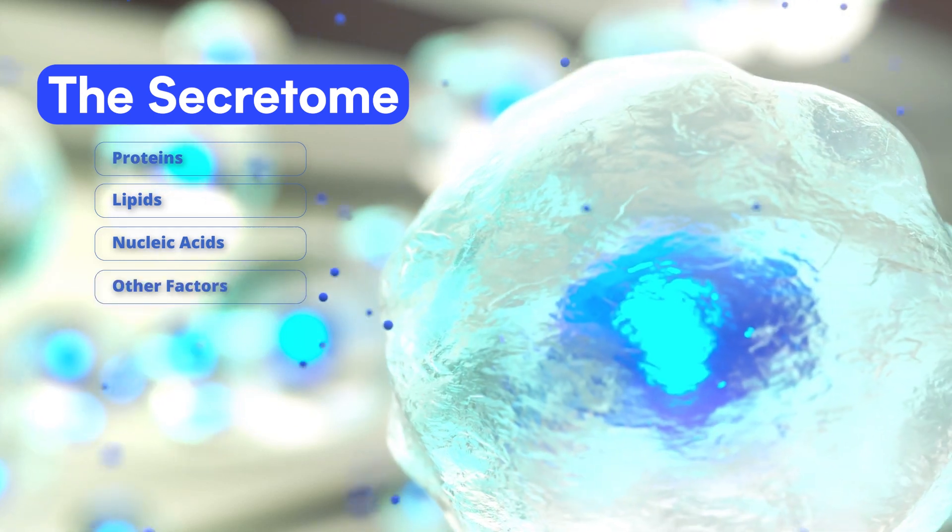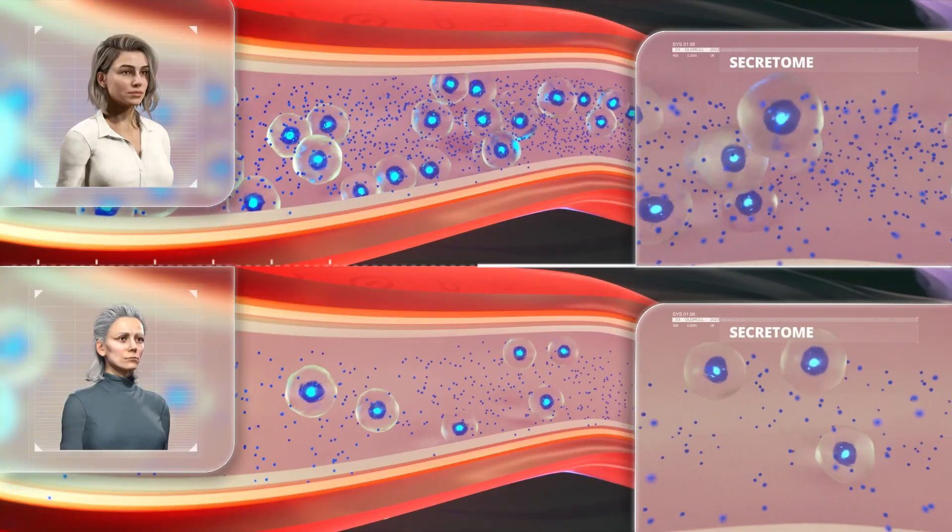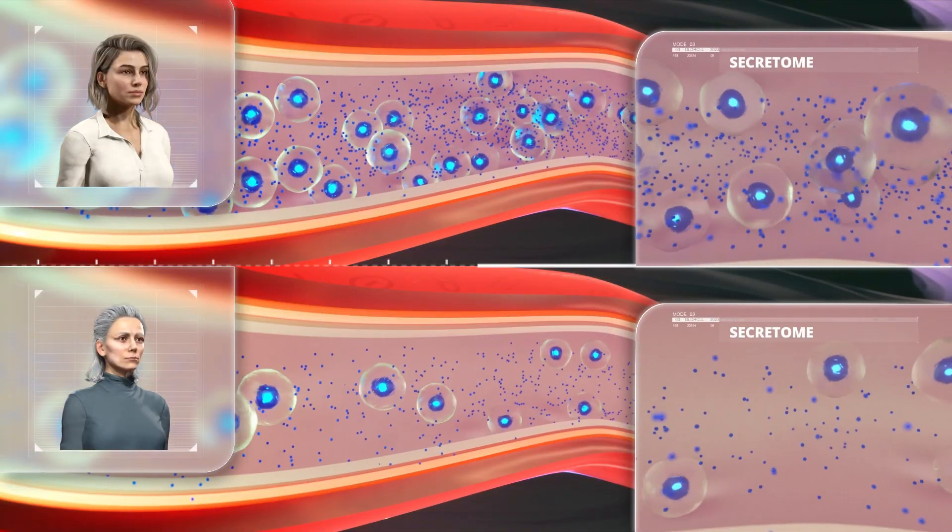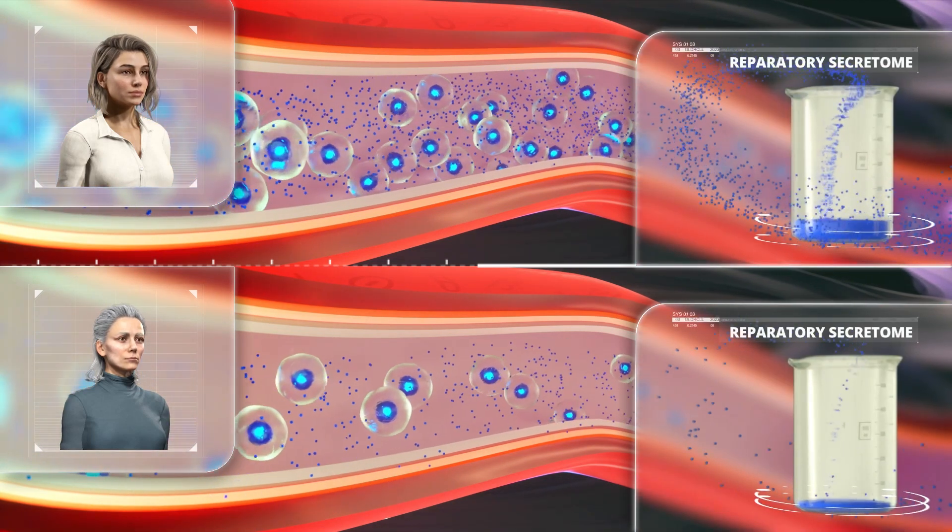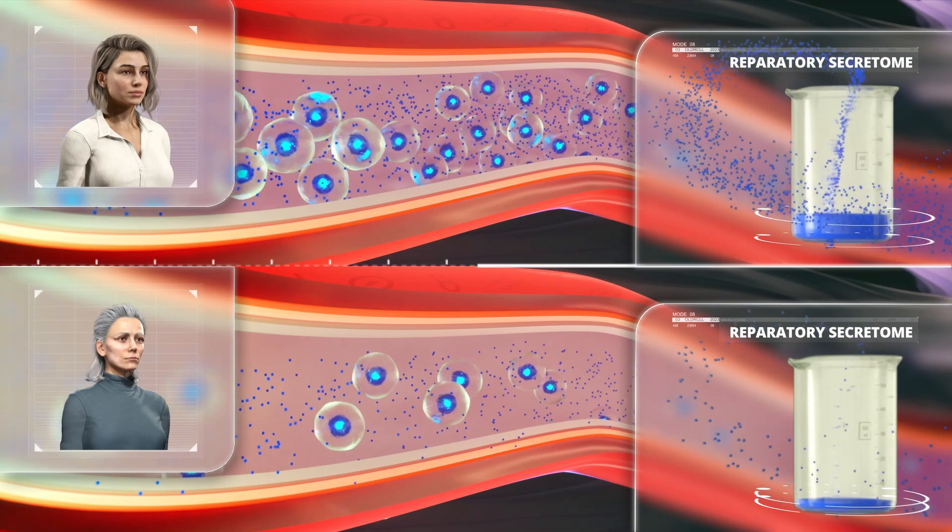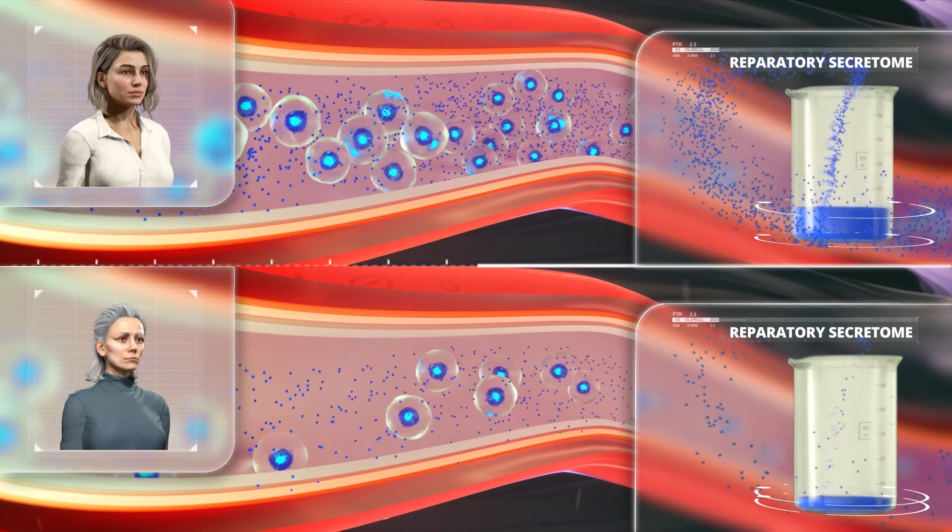As we age, the composition of the secretome changes, and the number of reparatory factors declines. Over time, our bodies produce less of the beneficial secretome that is necessary to maintain our health.